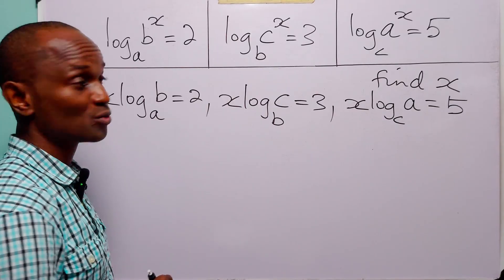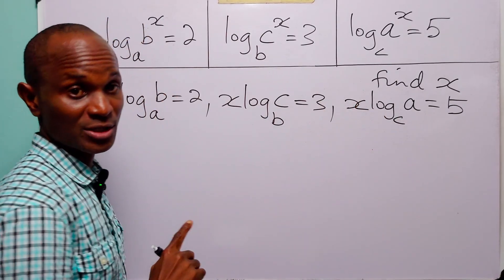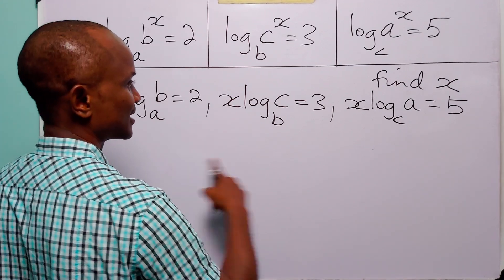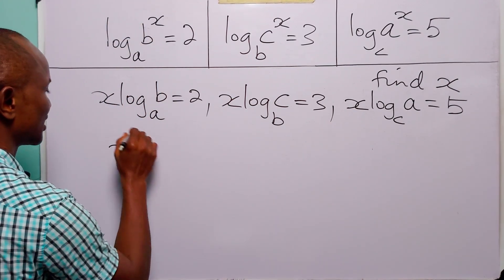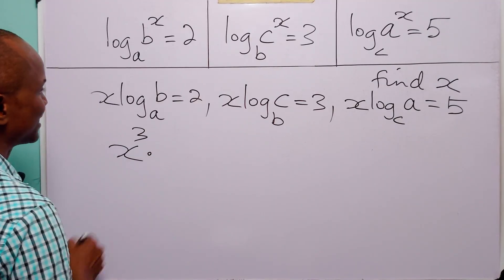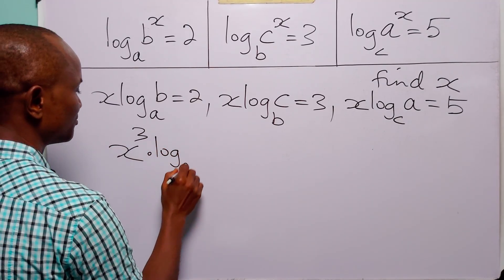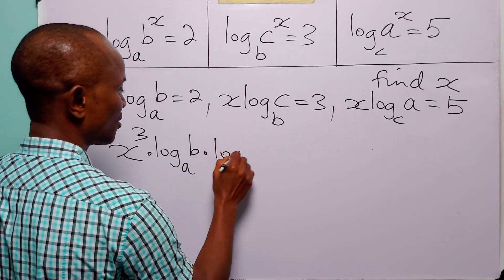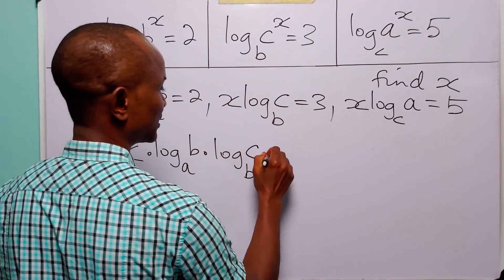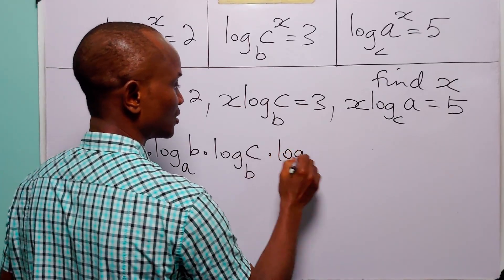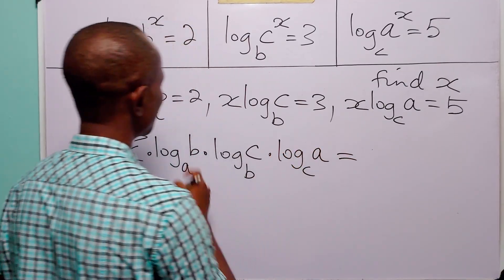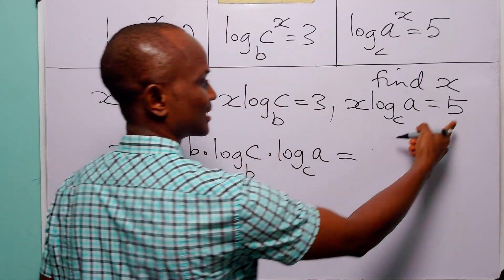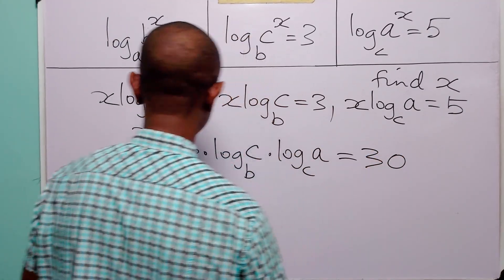Now the next thing we are going to do will be to multiply all three equations. When we do that we have x times x times x and of course that is x cubed multiplied by log to base a of b times log to base b of c times log to base c of a. And this is equal to 2 times 3, that is 6 times 5 which is equal to 30.